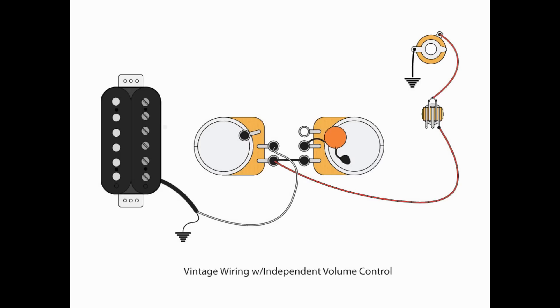And lastly, we would have a vintage-style wiring with independent volume controls. So from my pickup, I've got my output going to L2, or the center lug again of my volume. I've got a jumper from L1 on the volume pot to L3 of the tone pot, and my actual output is coming from L1 to my three-way switch.